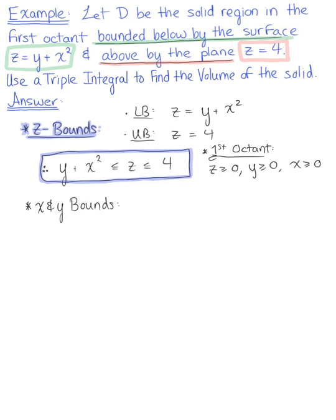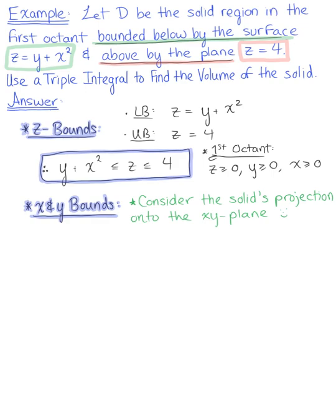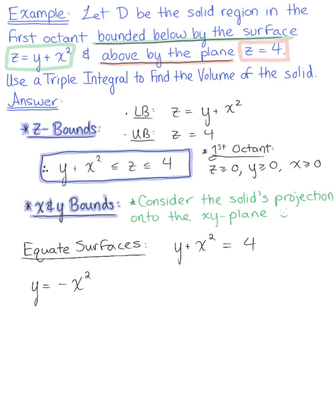To determine the x and y bounds of this solid region, we need to consider the solid's projection onto the xy-plane. To do this, we equate our surfaces — we set z equals z. So we have y plus x squared equal to 4. Simplifying, we get y equals negative x squared plus 4. Because this is restricted to the first octant, in R2 this is restricted to the first quadrant, so x is greater than or equal to 0 and y is greater than or equal to 0.